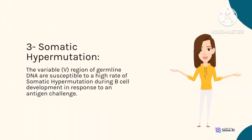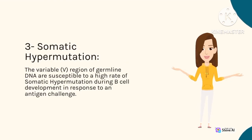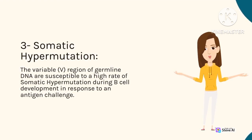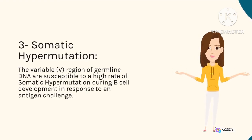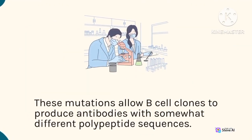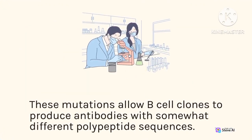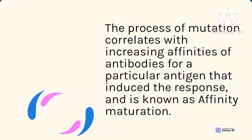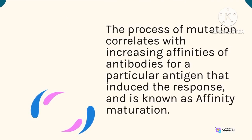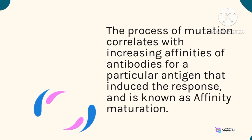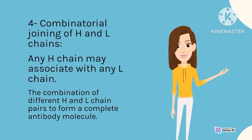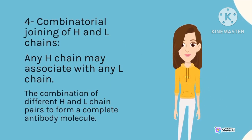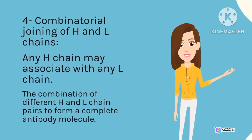Third, somatic hypermutation: The variable (V) regions of germline DNA are susceptible to a high rate of somatic hypermutation during B-cell development in response to antigen challenge. These mutations allow B-cell clones to produce antibodies with somewhat different polypeptide sequences. The process correlates with increasing affinities of antibodies for a particular antigen, known as affinity maturation. Fourth, combinatorial joining of H and L chains: any heavy chain may associate with any light chain, and the combination of different heavy and light chain pairs forms a complete antibody molecule.